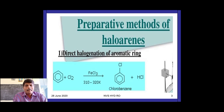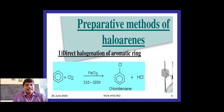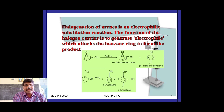The first method is direct halogenation of the aromatic ring. Benzene is treated with chlorine in the presence of a Lewis acid like FeCl3 — chlorobenzene is formed. It is the direct chlorination of benzene; it is an electrophilic substitution reaction. There are five electrophilic substitution reactions of benzene: Friedel-Crafts alkylation, Friedel-Crafts acylation, nitration, sulfonation, and halogenation.